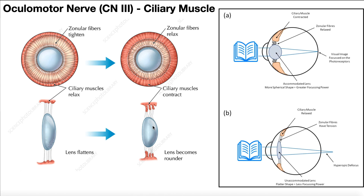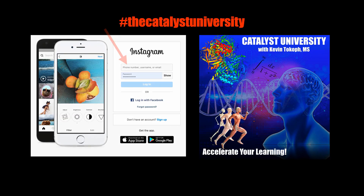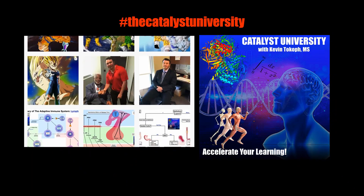Hopefully this video gave you a good understanding of the parasympathetic component of the oculomotor nerve. In the next video, we're going to briefly look at the trochlear nerve — a fairly simple cranial nerve that we don't have to spend a whole lot of time on, so be sure to join us there. Thanks for tuning in. Please like, subscribe, and check out my Instagram for cool science and other stuff.